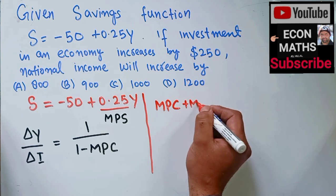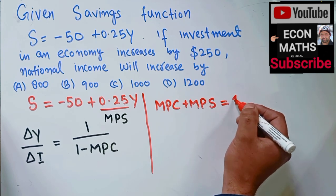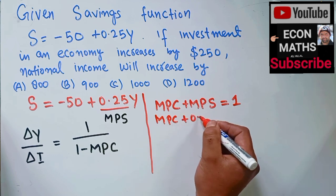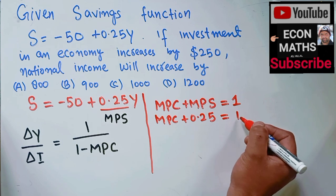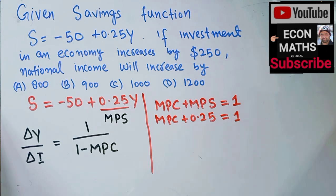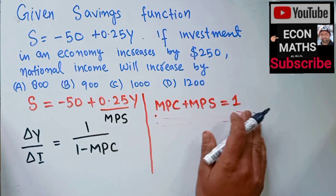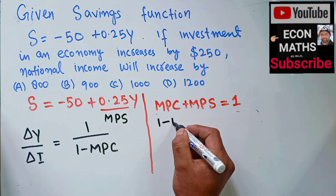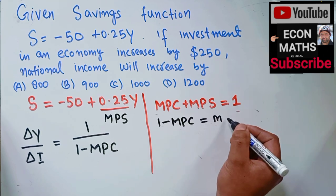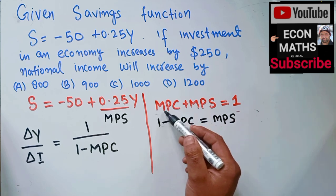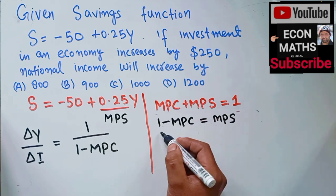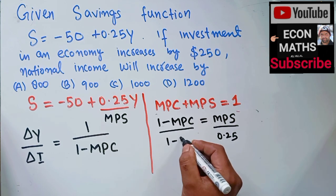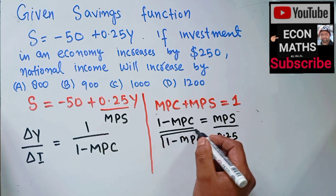We know the property that MPC plus MPS equals 1. Rearranging, 1 minus MPC equals MPS. Since MPS is given as 0.25, we can write 1 minus MPC equals 0.25. This relationship allows us to substitute directly into the multiplier formula.